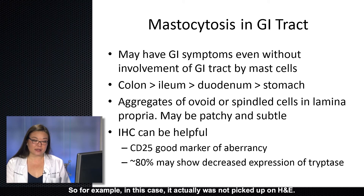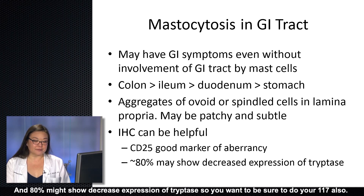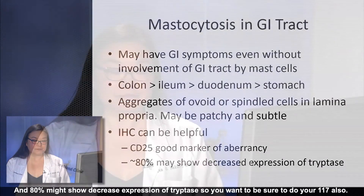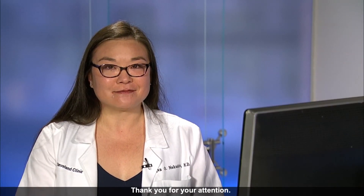When mastocytosis involves the GI tract, it most typically affects the large intestine followed by the ileum, duodenum, and stomach. You'll see these little aggregates of ovoid or spindled cells in the lamina propria, and it can be patchy and subtle — in this case it was not picked up on H&E. IHC is very helpful; we use CD25 as our marker for aberrancy, and 80% might show decreased expression of tryptase, so be sure to also do CD117. That's all for today. Thank you for your attention.